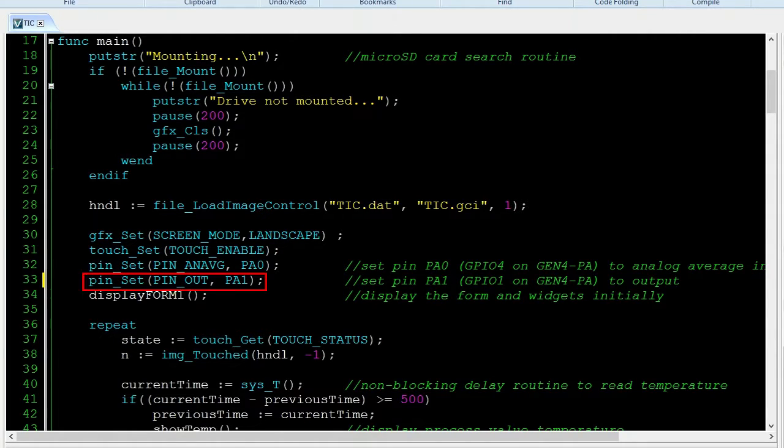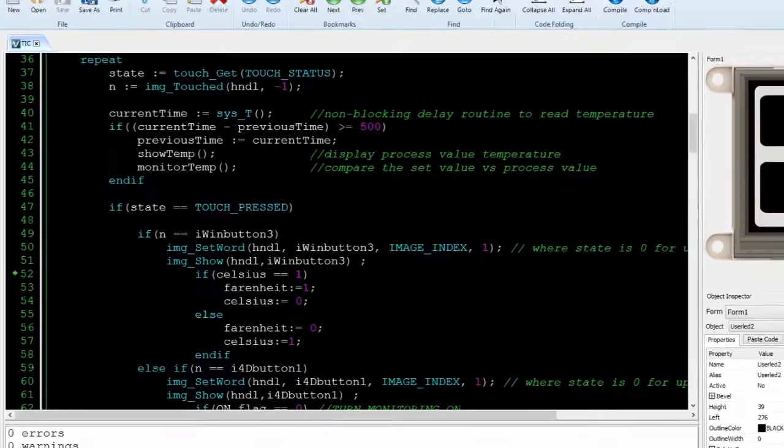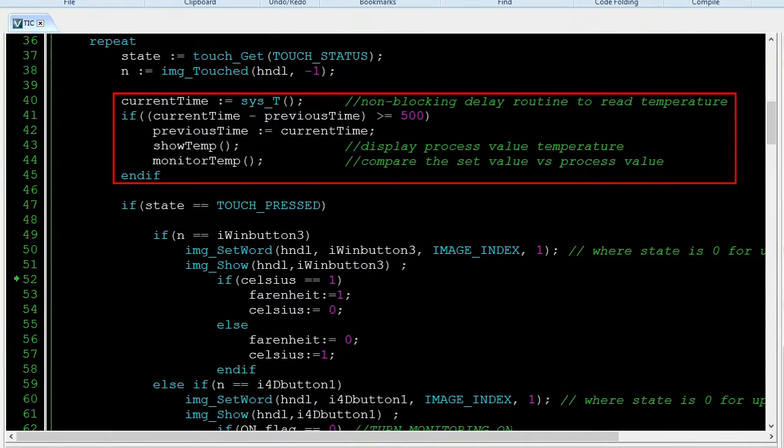Next, we set pin PA1 or GPIO3 to output. This will be the output signal for the relay. Now let's proceed to the loop. In here, you can observe the non-blocking delay routine which will sample the analog reading every 500 milliseconds. Then, it will perform the show temp and monitor temp subroutine functions.